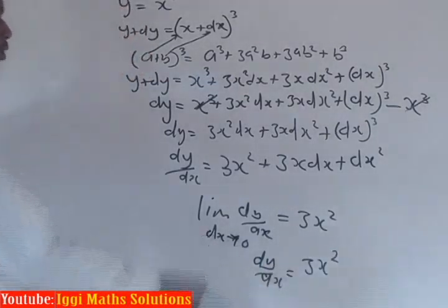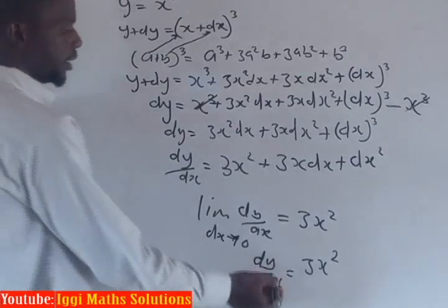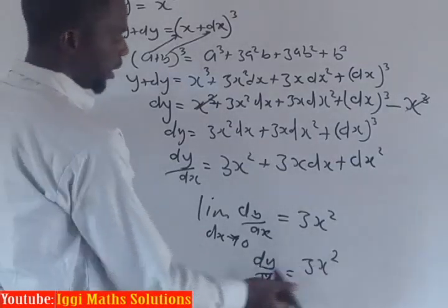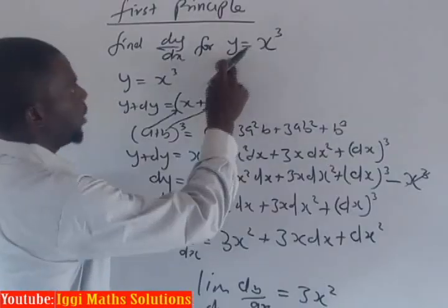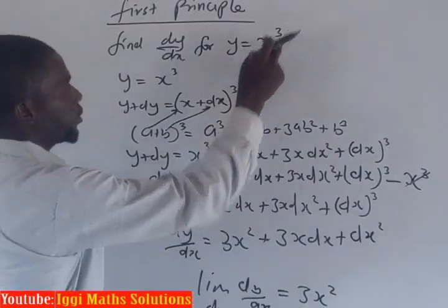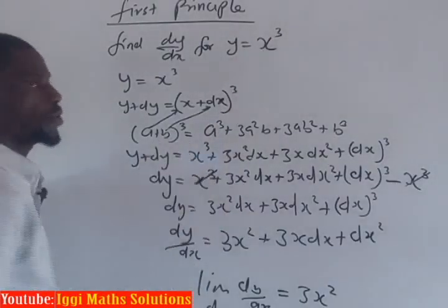So from here, we can finally say that 3x squared is the derivative of y equals x cubed, derived from the first principle.